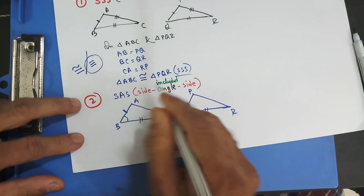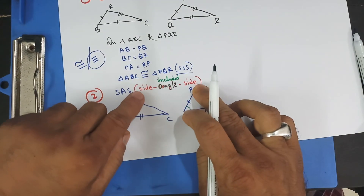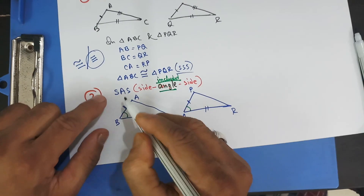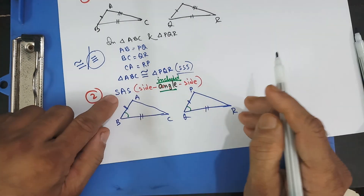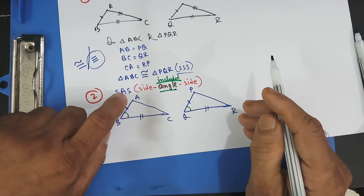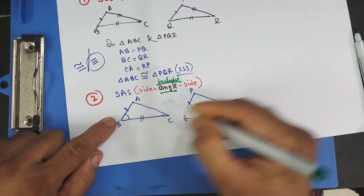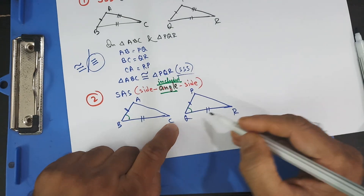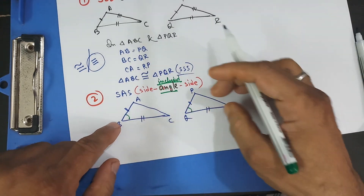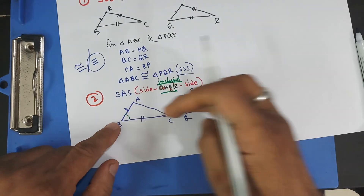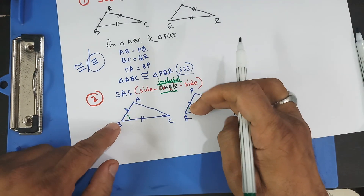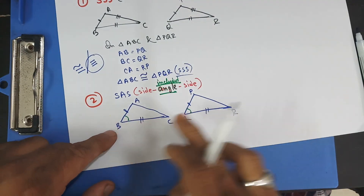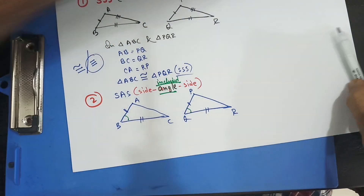The included angle means the angle in between the two given sides. We're going to say side, included angle, side. So: this side equals this side, this side equals this side, and in between these two sides the angles are equal. When I have that condition, these two triangles are congruent.